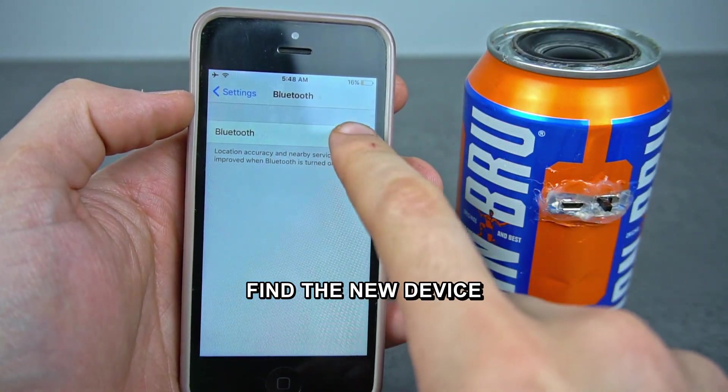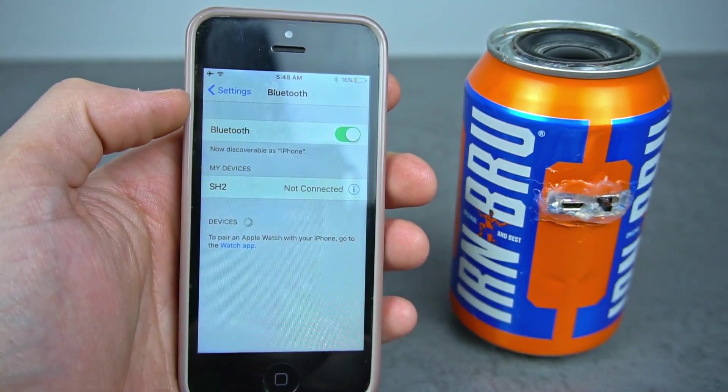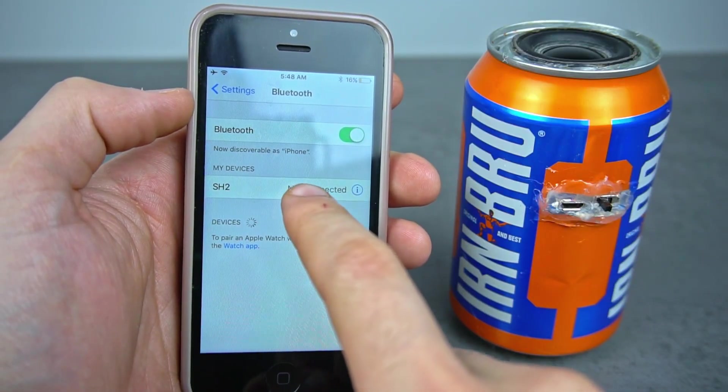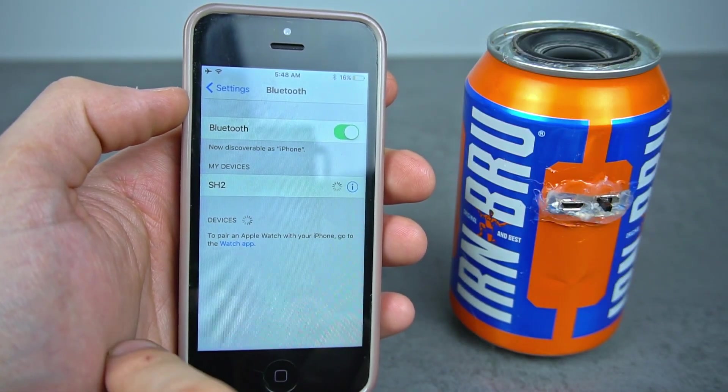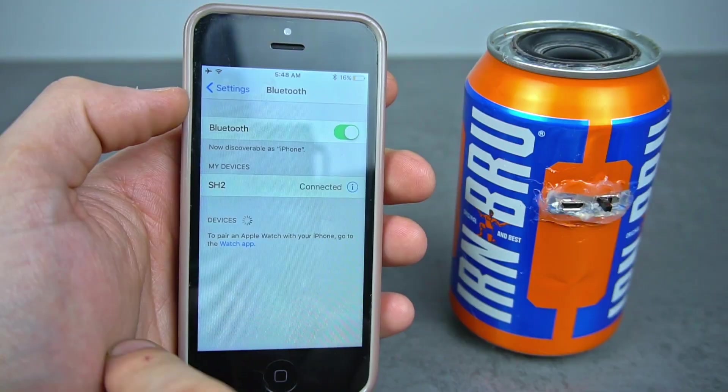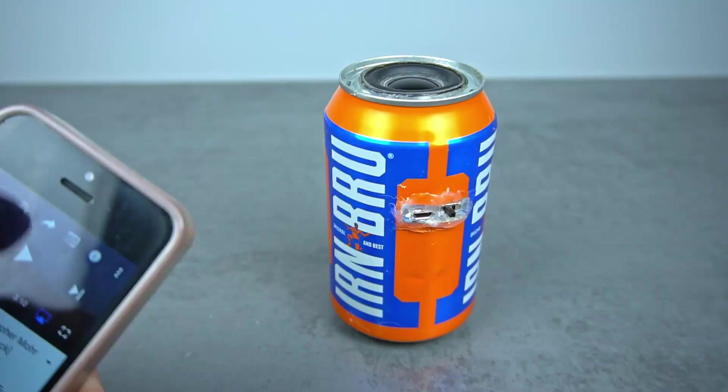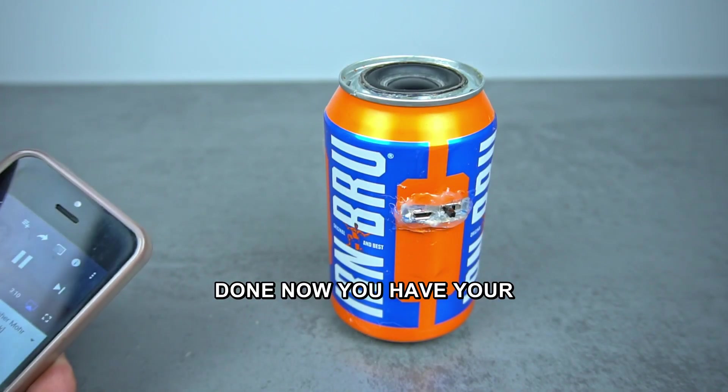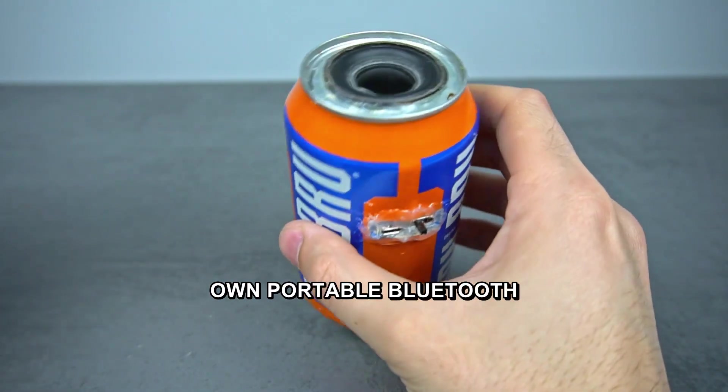Find the new device in your phone's Bluetooth device list and connect. Done! Now you have your own portable Bluetooth speaker.